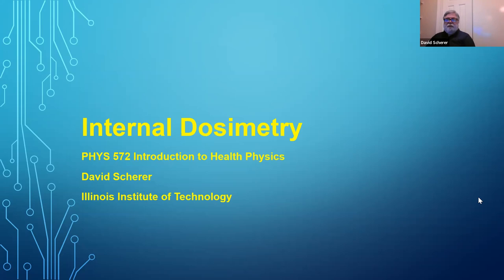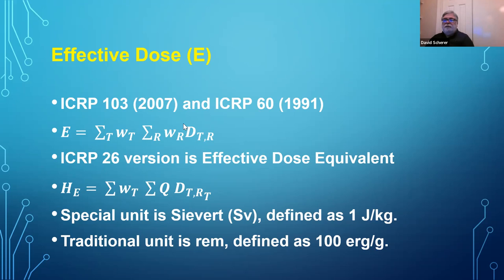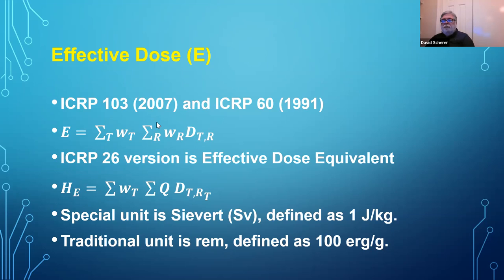Today we're going to talk about internal dosimetry. Last time we talked about external dosimetry, and this builds on that. We talked about effective dose — where we have a weighting factor for the kind of radiation we're working with, and a weighting factor for the kind of tissue that's irradiated. We multiply, we get our doses to our individual tissues. So there might be alpha radiation to the spleen, multiplied by the radiation weighting factor for alpha particles, then beta particles to the spleen multiplied by the weighting factor for beta particles, which is one. We add up all those for any particular kind of tissue and get the effective dose for each kind of tissue in the body.